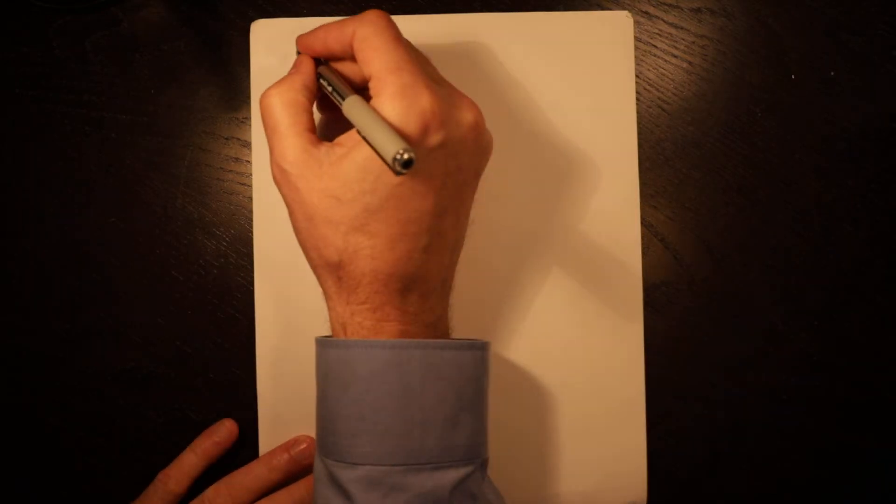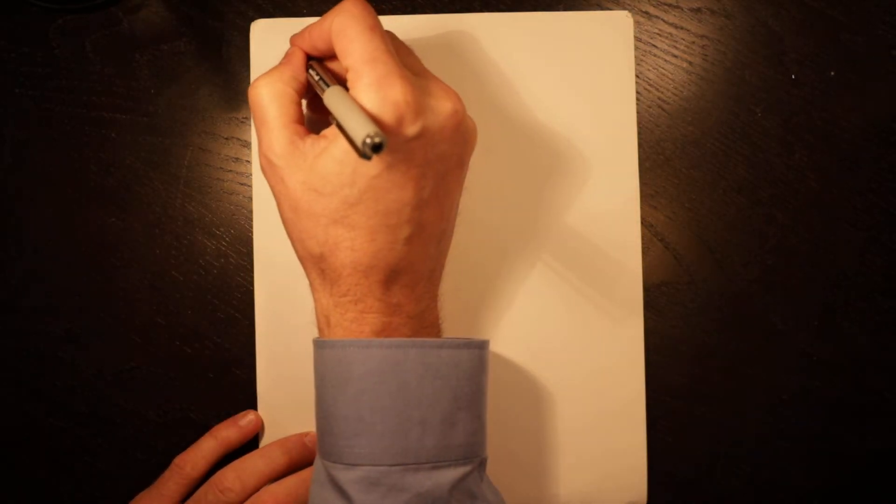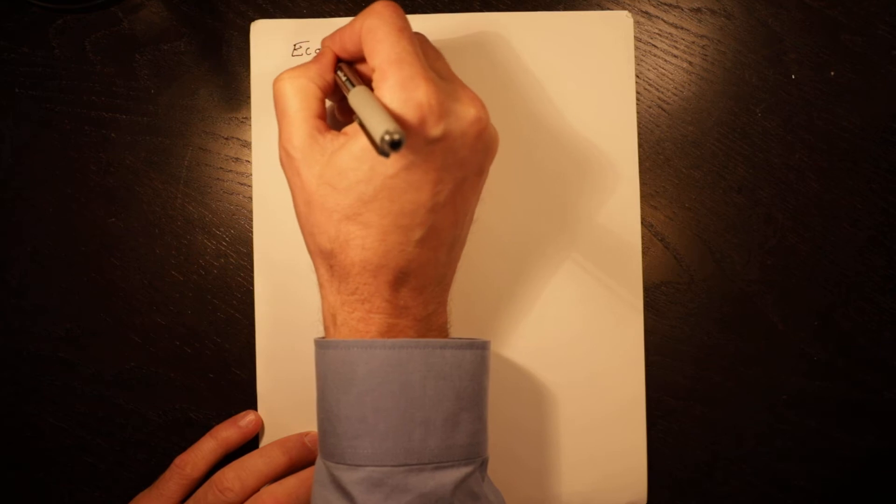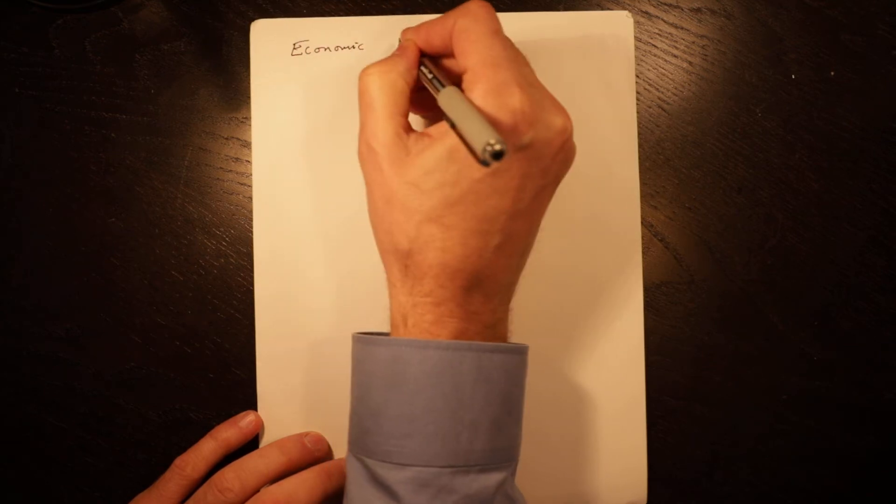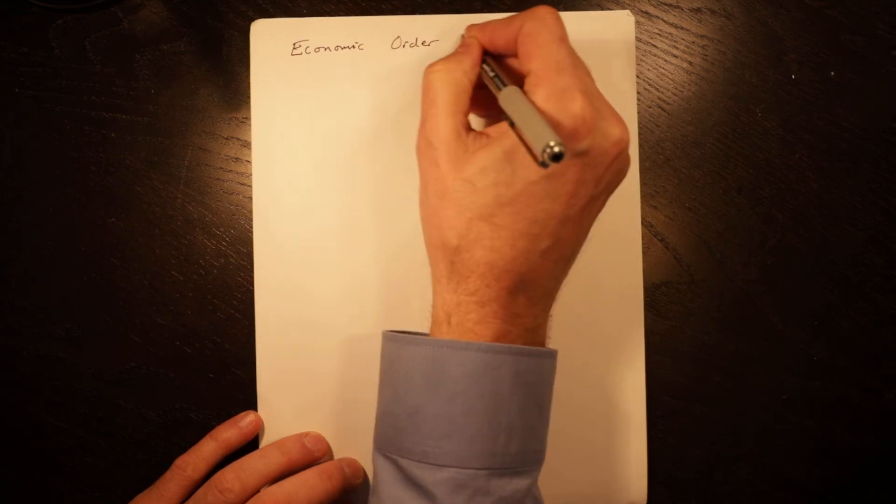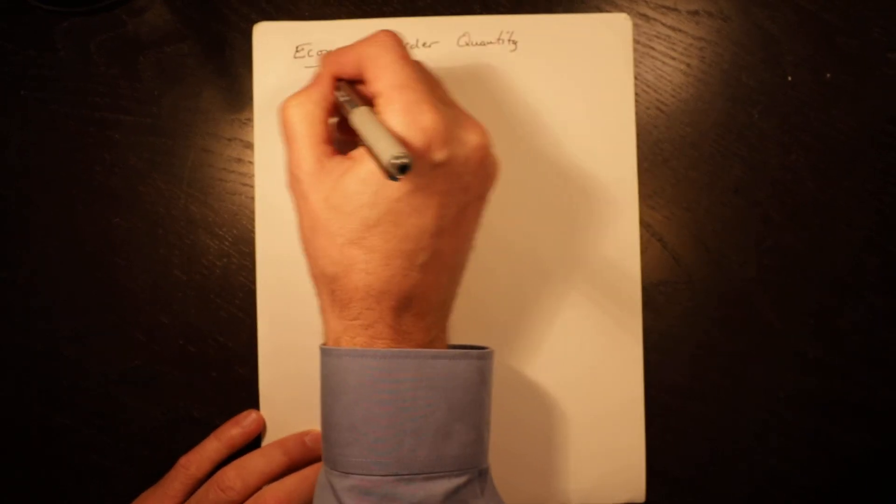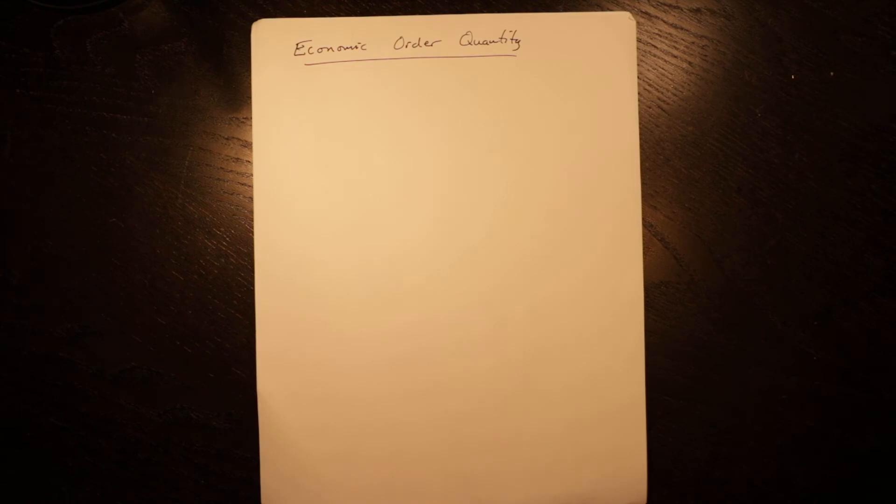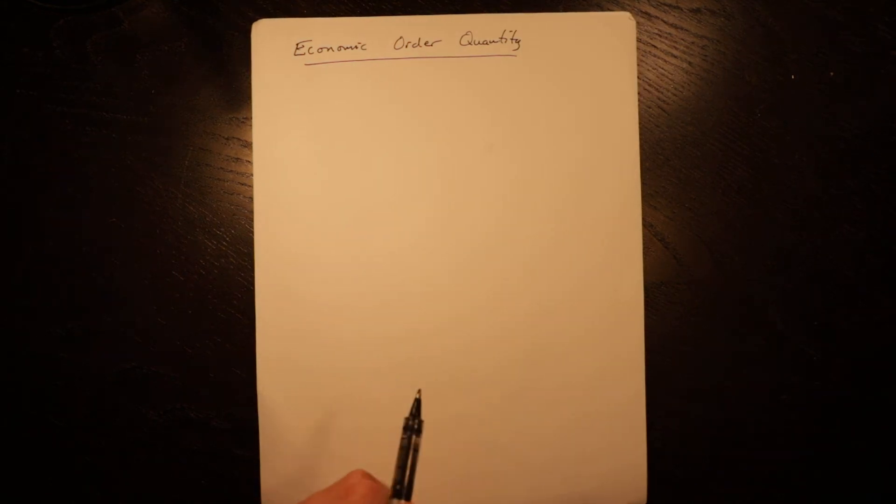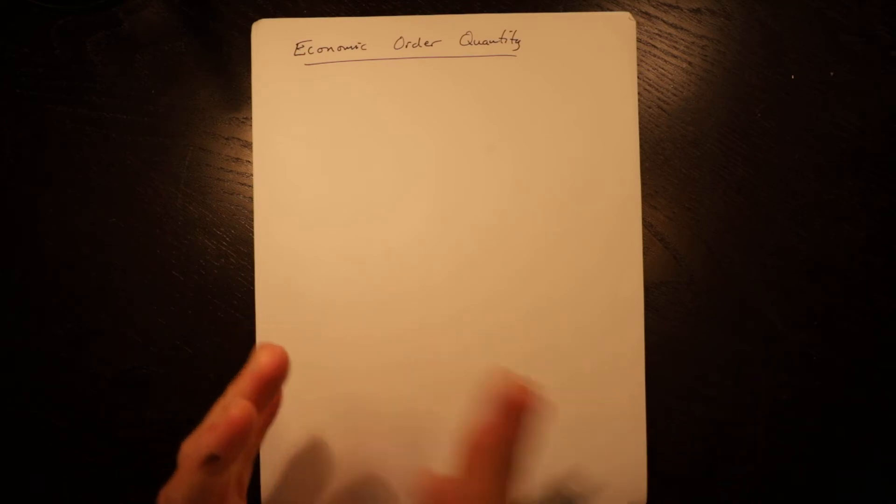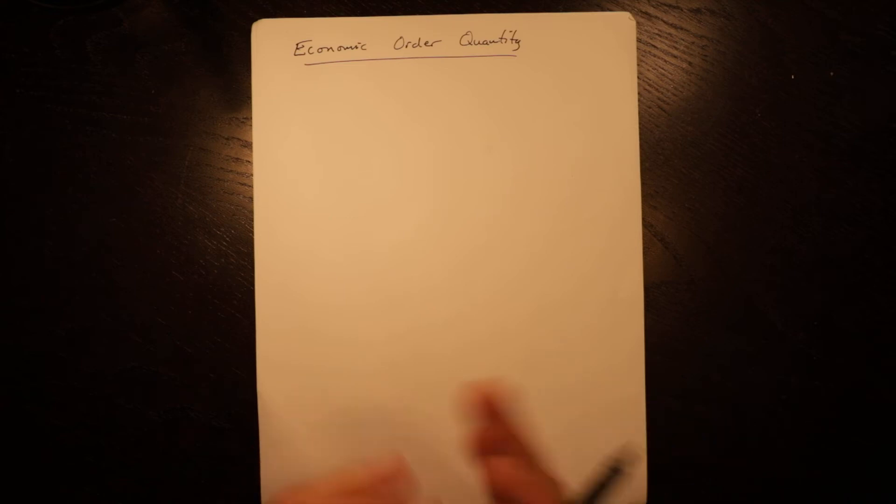This video is one of a series on inventory, and we're introducing the economic order quantity. The economic order quantity is a simple inventory ordering model with very little uncertainty. You know how long it takes to get product, you know exactly what your demand is, and your demand isn't uncertain.